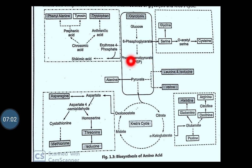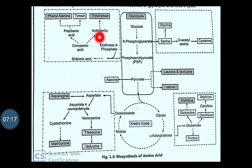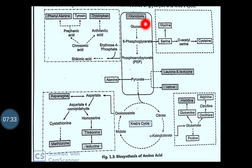The phosphoenol pyruvate and the erythrose-4-phosphate enter into the shikimic acid pathway. It will form the chorismic acid, prephenic acid and anthranilic acid. From this anthranilic acid, the biosynthesis of tryptophan takes place, and from prephenic acid, the biosynthesis of phenylalanine and tyrosine takes place. In this way, the different amino acids, both essential and non-essential, get biosynthesized in the plant.